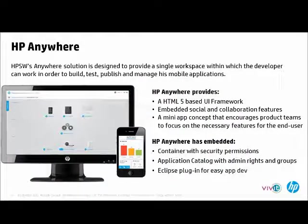HP Anywhere provides a framework for developers to build, test, publish, and manage mobile applications in a single workspace. It offers an HTML5-based UI framework and embedded collaboration — for example, submitting an expense to a manager and getting real-time approval feedback. The mini-app concept allows users to on-demand access applications from the app catalog within HP Anywhere. The IT administrator can securely manage role-based access, admin rights, and groups, all tied to corporate LDAP authentication and single sign-on.